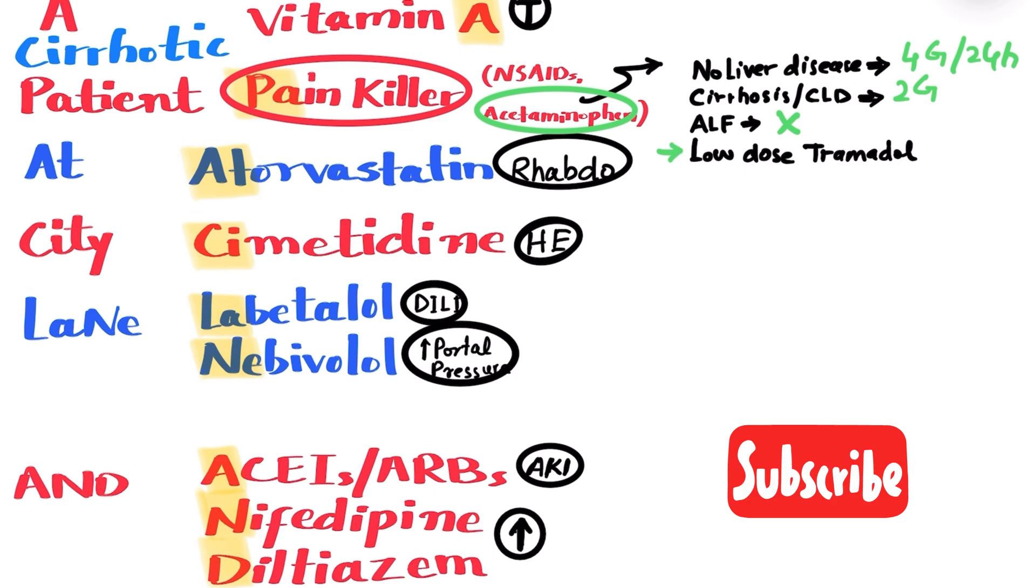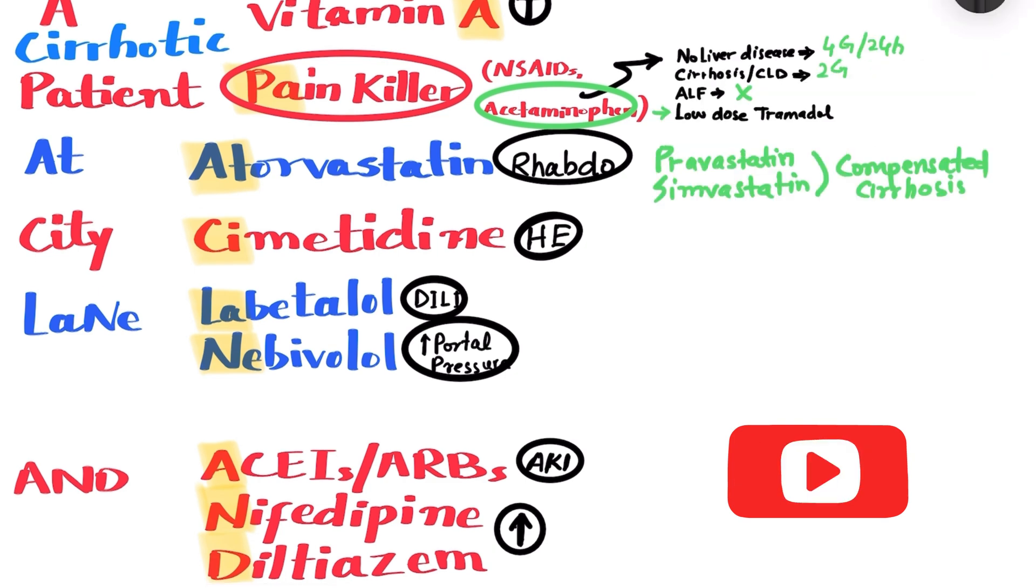Another option for pain medication in chronic liver disease patients is low-dose tramadol. AT stands for atorvastatin. It should be avoided in all patients with liver failure as it increases the risk of rhabdomyolysis. The two statins that can be used are pravastatin and simvastatin that should only be used in compensated cirrhosis. However, in the patients with decompensated cirrhosis, it's better to avoid any types of statin altogether.